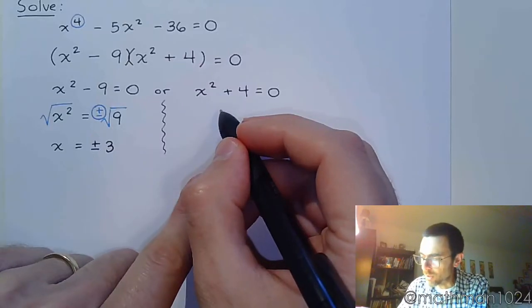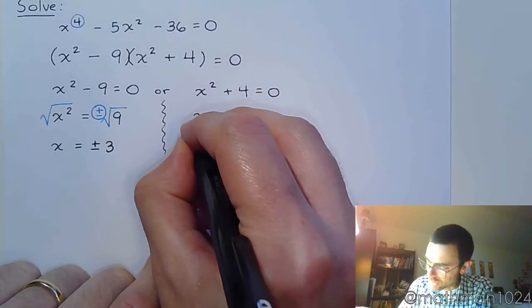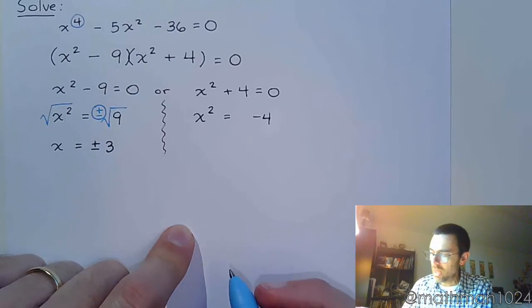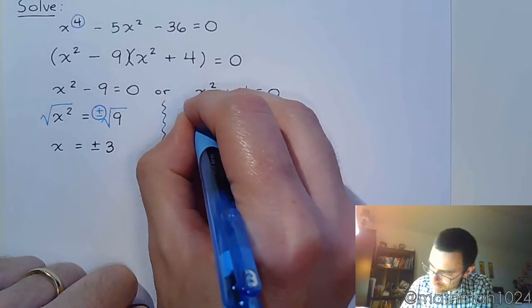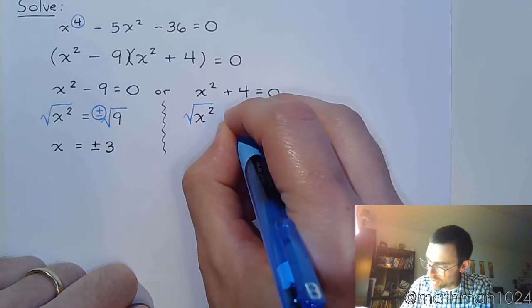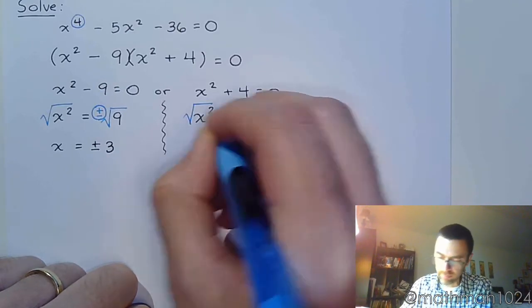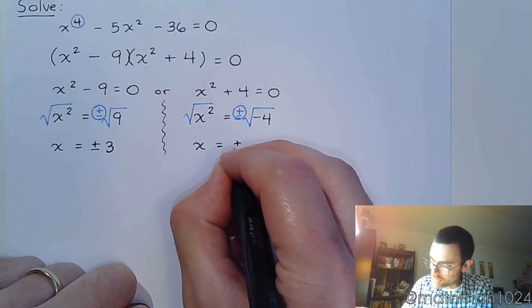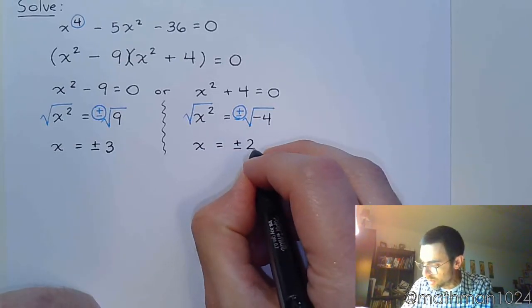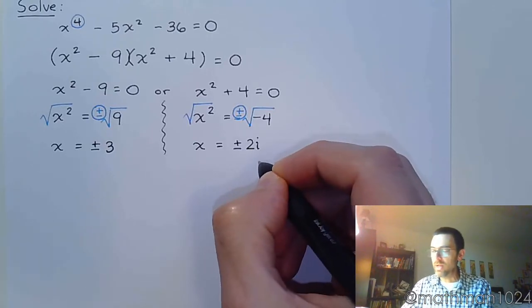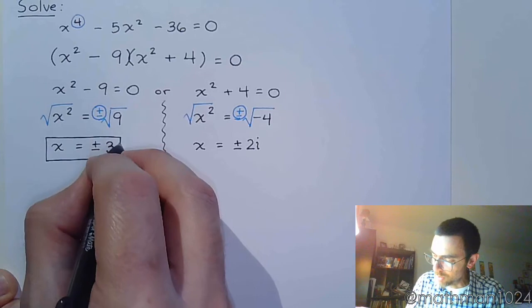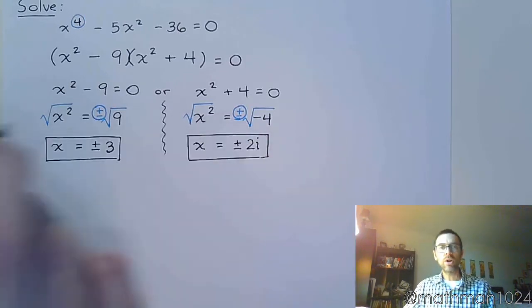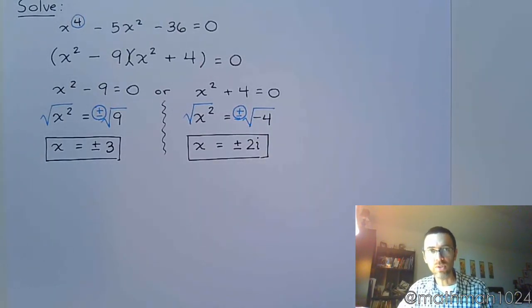Over here, we're going to do something very similar, solving this guy using the square root property. But first, get the square by itself by subtracting 4 on both sides. And now use that square root property on both sides of the equation. Don't forget the plus or minus. So x = ±√(-4). The square root of 4 is 2, and the negative inside is going to make this 2i. So in this equation, we end up with two solutions that are real and two solutions that are imaginary. But all four of these guys will constitute the solution set for this equation.